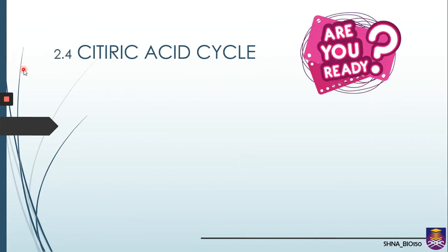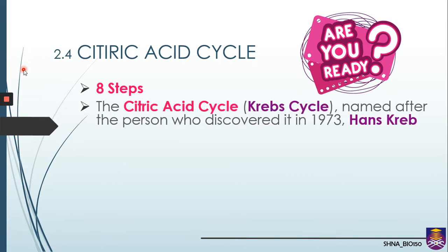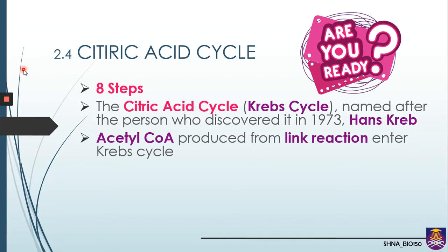The citric acid cycle consists of 8 steps. Remember, in glycolysis we had 10 steps, then pyruvate oxidation has 3 steps, and now in CAC — which I use as a short form — we will learn another 8 steps. CAC is also known as the Krebs cycle, named after the person who discovered it, Mr. Hans Krebs.